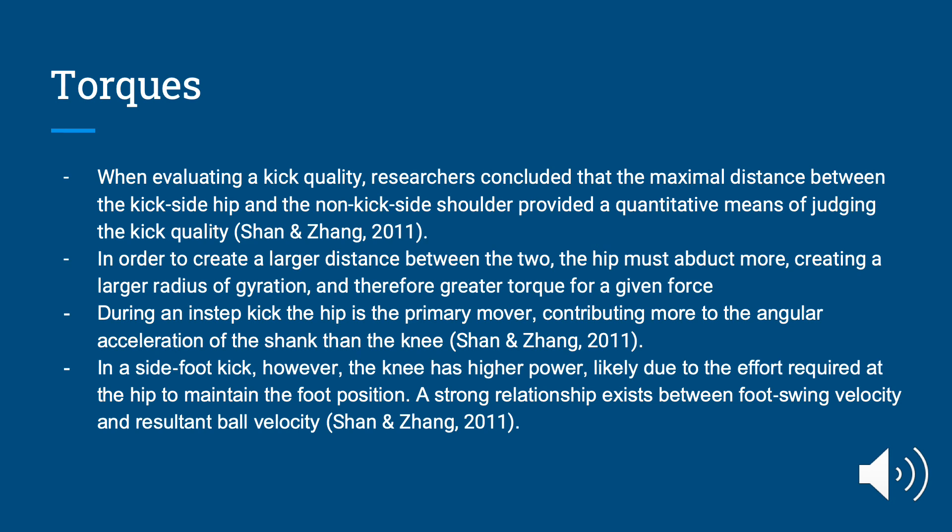Now we're going to talk about torques. Regarding the optimal position for kicking a soccer ball, researchers concluded that the maximal distance between the kick-side hip and the non-kick-side shoulder provided a quantitative means of judging kick quality. To create a larger distance between the two, the hip must abduct more, creating a larger radius of gyration and therefore a greater torque for a given force. During an instep kick, the hip is the primary mover, contributing more to the angular acceleration of the shank than the knee. In a side-foot kick, however, the knee has higher power, likely due to the effort required at the hip to maintain foot position. A strong relationship exists between foot swing velocity and resultant ball velocity.